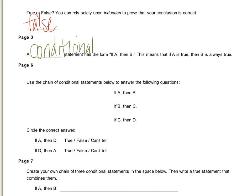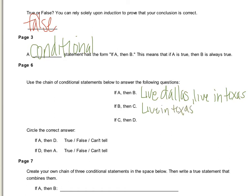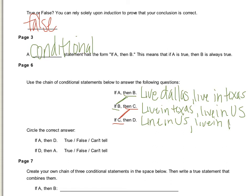Let's say: if you live in Dallas, that means you live in Texas. If you live in Texas, that means you live in the U.S. Notice that these letters repeat themselves — if A then B, and then the next statement starts with B, so they're the same thing, underlined in green. And since it said if B then C, and the next one starts with C, the last statement would be: if you live in the U.S., then you live in North America.